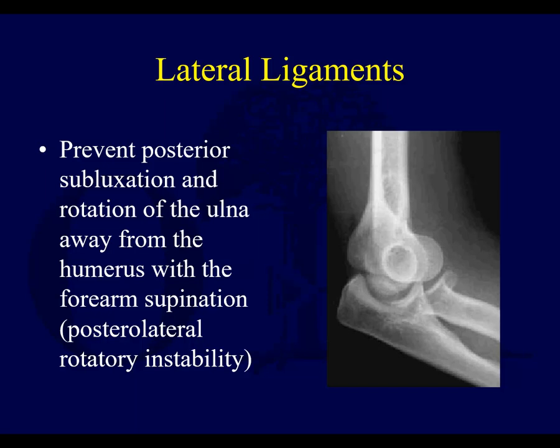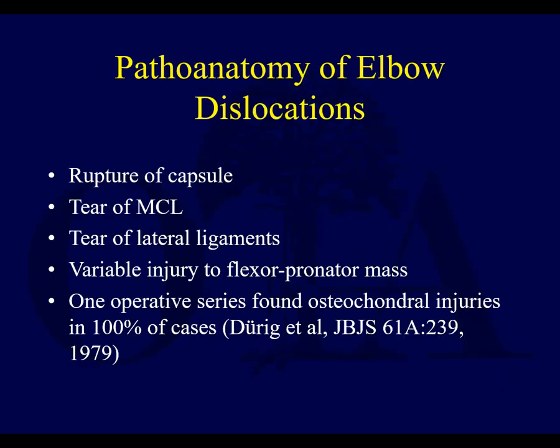The lateral ligaments prevent posterior subluxation and rotation of the ulna — the so-called posterolateral rotatory instability. As shown here, you can see the radial head is not perfectly congruent with the capitellum, and there can be rotation and posterior subluxation. If a patient has that, they need a repair of the lateral ligaments.